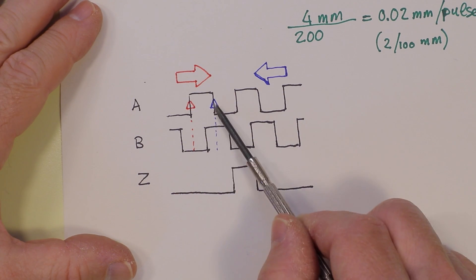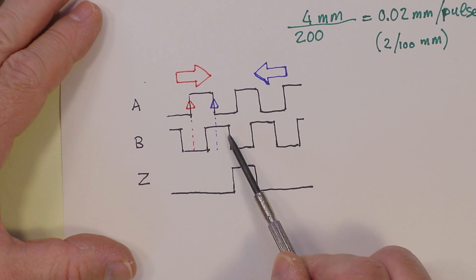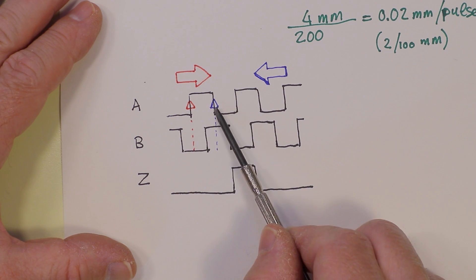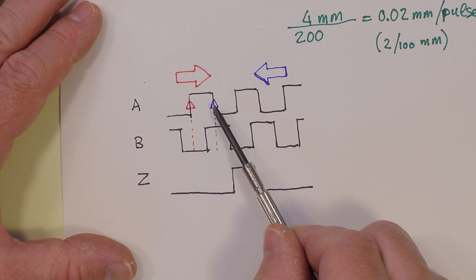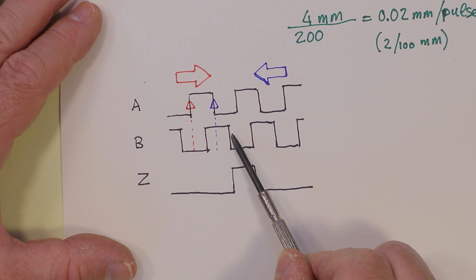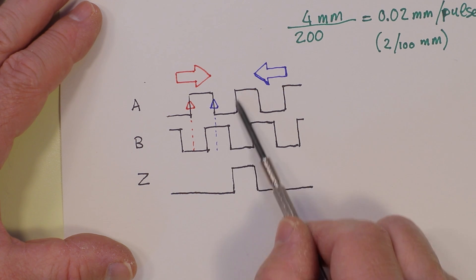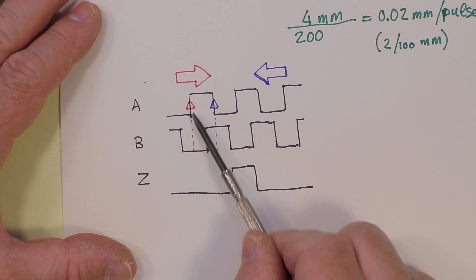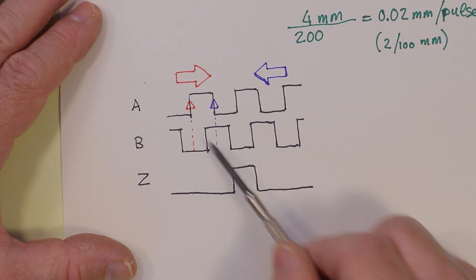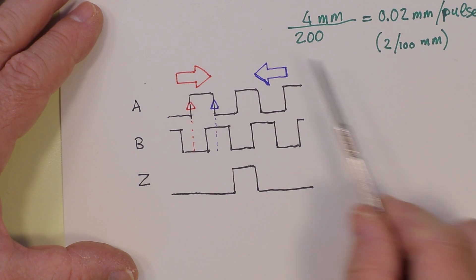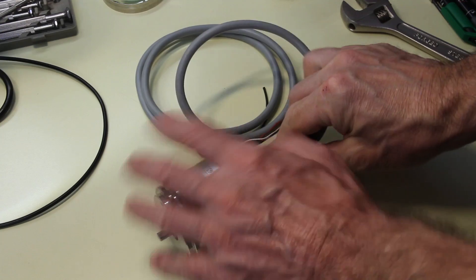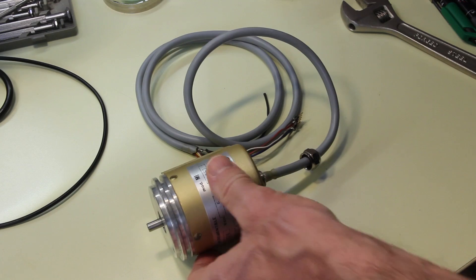And you can notice that if we count the edges of each signal, we can multiply by four the resolution, because we have one, two, three, and four edges before the next cycle. So in one cycle we have four edges, so we can multiply by four the resolution of the encoder. But this is quite an advanced concept, so I would keep this aside in this video.